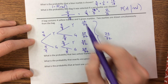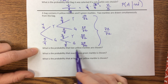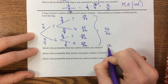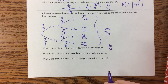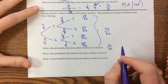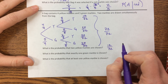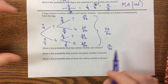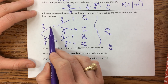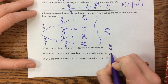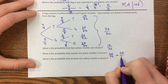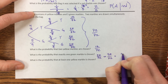What is the probability that two yellow marbles are chosen? We take the yellow-yellow branch: 12 out of 72, which reduces to one-sixth. What is the probability that exactly one green is chosen? Exactly one green means either yellow-first-then-green or green-first-then-yellow, so that's 20 over 72 plus 20 over 72, giving 40 out of 72.